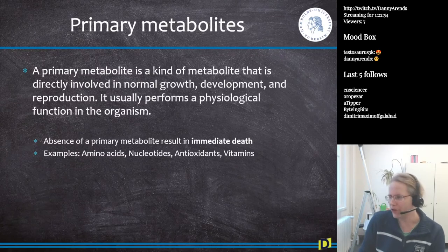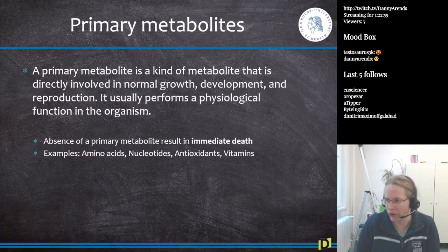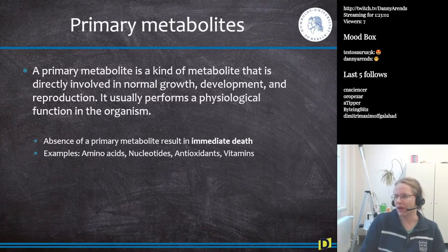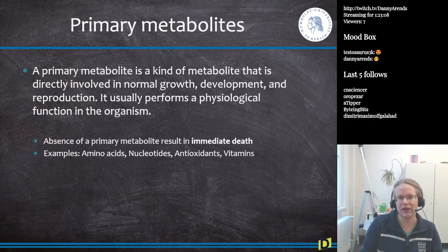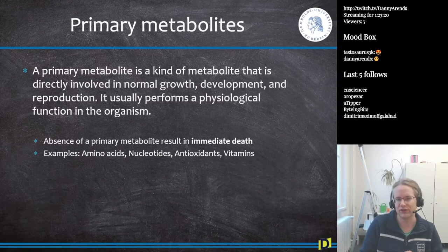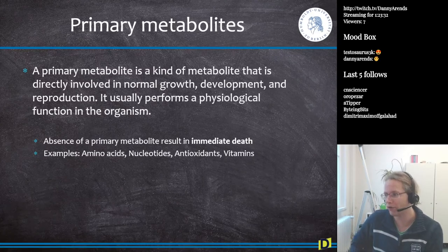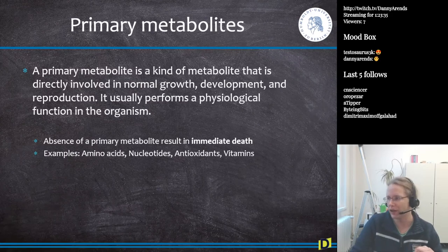Welcome back everyone to lecture number six of the bioinformatics course part two. We'll continue with primary metabolites. There are two types of metabolites in every organism. A primary metabolite is involved in growth, development, and reproduction. The easiest way to remember: if a primary metabolite is missing, it results in immediate death.